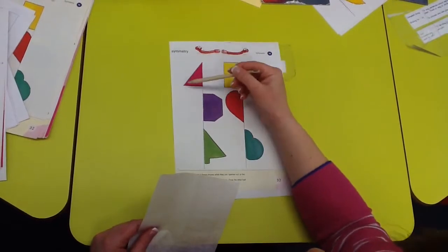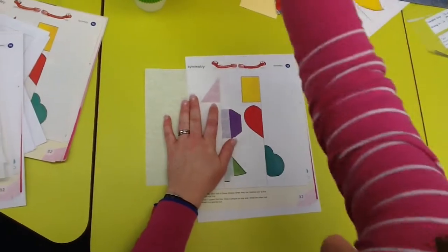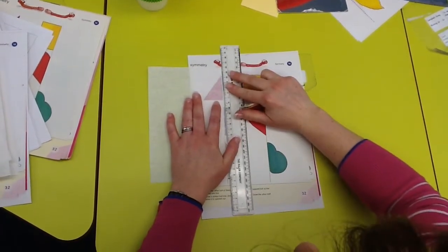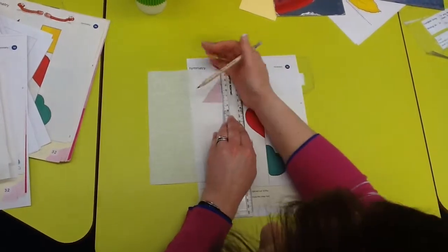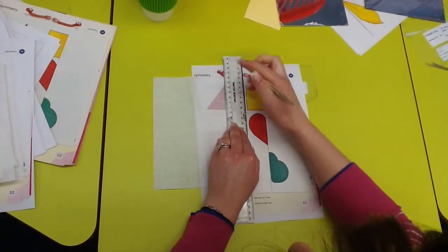So we're going to have a look at this one here first. So you place your tracing paper over the shape. Now I'm going to use a ruler so it's really neat. And I'm going to draw my mirror line. There we go. Draw my mirror line on here.